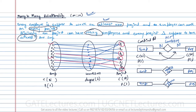Next is the single line double line representation. The participation of employee is one and the participation of project is one, so both sides are in total participation — represented by double lines on both sides. Finally, in the min-max representation, the minimum cardinality of employee is one and maximum is N; the minimum cardinality of project is one and maximum is M. This represents the many-to-many relationship.